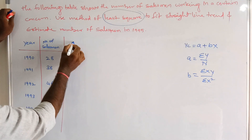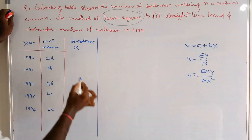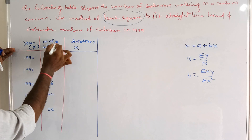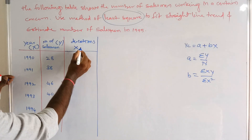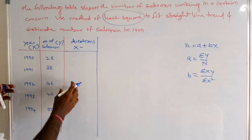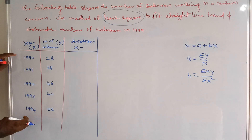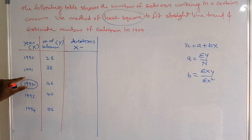For the x deviations, we calculate x minus the origin year. Since the number of years is odd, we take the middle year as the origin. The midpoint of the five years — 1990 to 1994 — is 1992, so the origin is 1992.